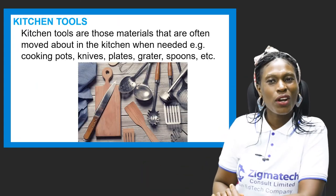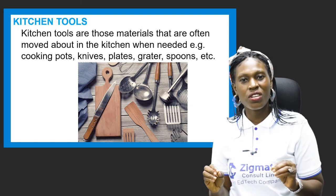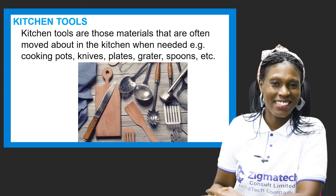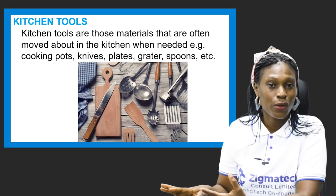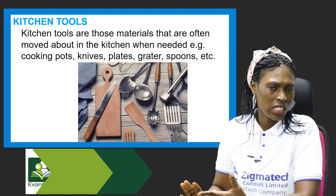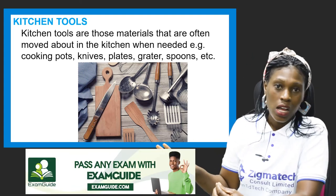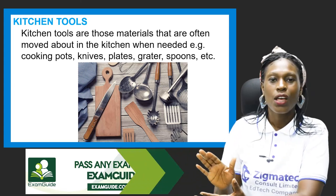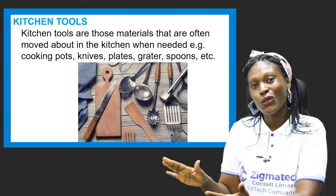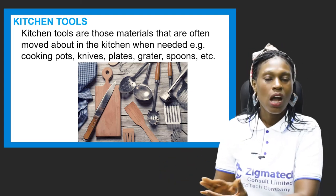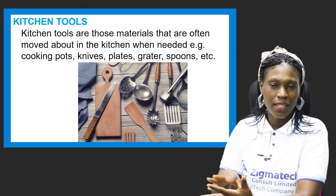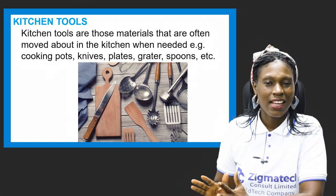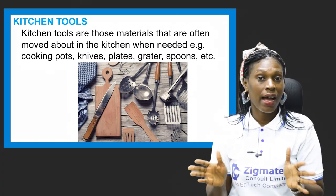Another category we use almost every day is kitchen tools. Kitchen tools are materials that are often moved about in the kitchen when needed. You can move them, place them here, pick them up, do whatever you want, and put them back in the right places. They are not heavy and don't need to be fixed. Examples include cooking pots, knives, plates, cups, graters, colanders, and spoons.